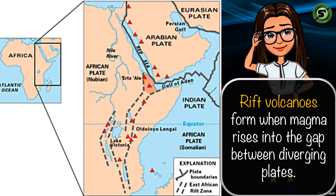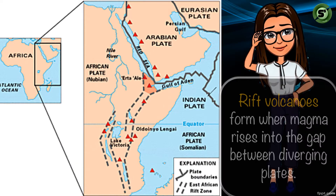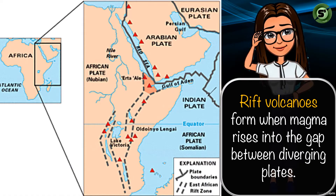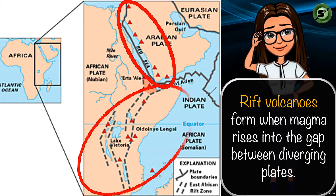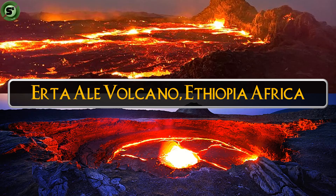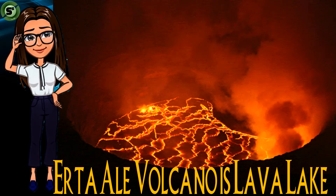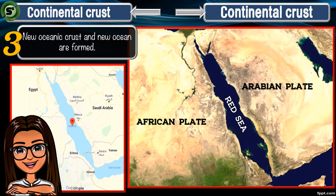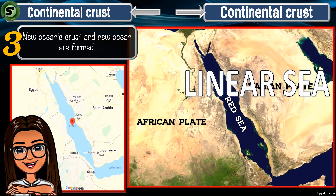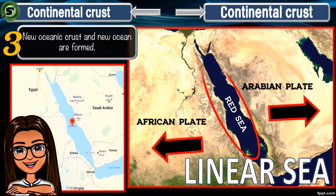As continental divergence occurs, rift volcanoes are formed as magma rises to fill the gap between diverging plates. You can see a series of volcanoes between the African plate and the Arabian plate. As Africa is torn apart, volcanoes in between its pieces are seen. This is Erta Ale volcano of Ethiopia, Africa — named by natives as the 'lava lake.' When continental divergence is at its third stage, a linear sea is evident: the Red Sea is formed due to the diverging African and Arabian plates.